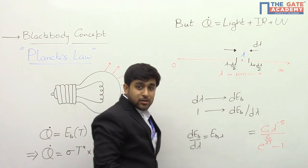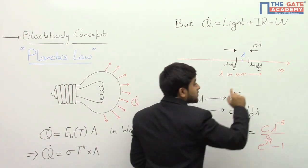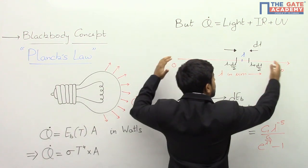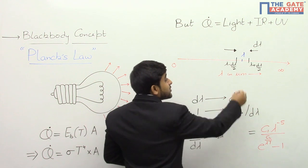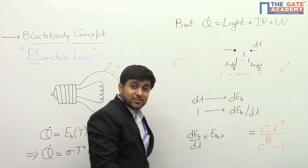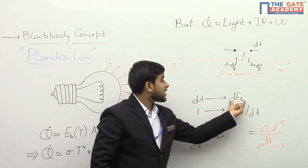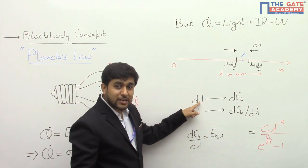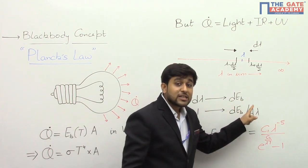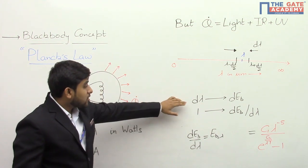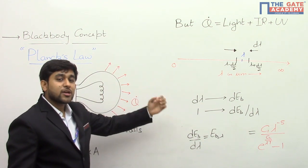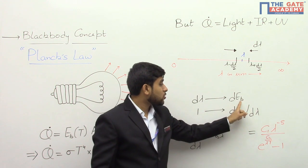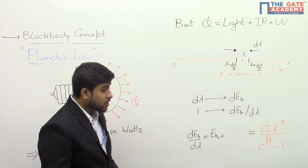Lambda is the wavelength value, and around this wavelength lambda there is a very small wavelength range d-lambda. Now, Eb(T) — the black body emissive power — consists of all wavelengths, so from zero to infinity the total energy emitted is Eb(T). If Eb(T) is for the whole wavelength range, then the amount of energy for this very small wavelength range will also be very small. Let us call that energy d-Eb. So d-Eb is the amount of energy emitted in the very small wavelength range d-lambda around wavelength lambda, per unit time per unit area.